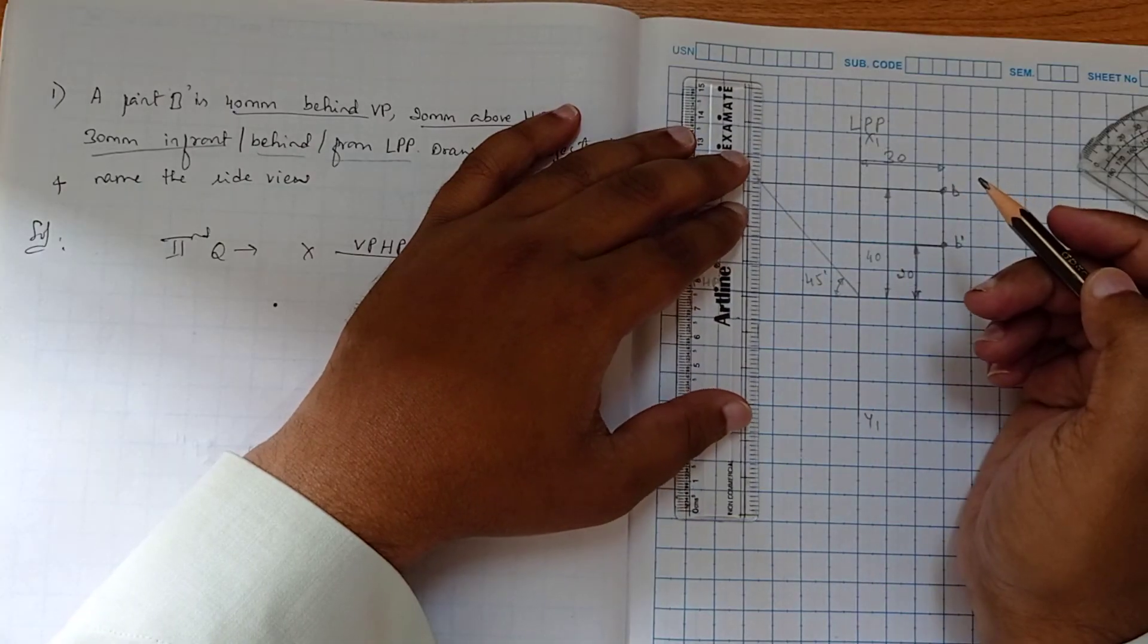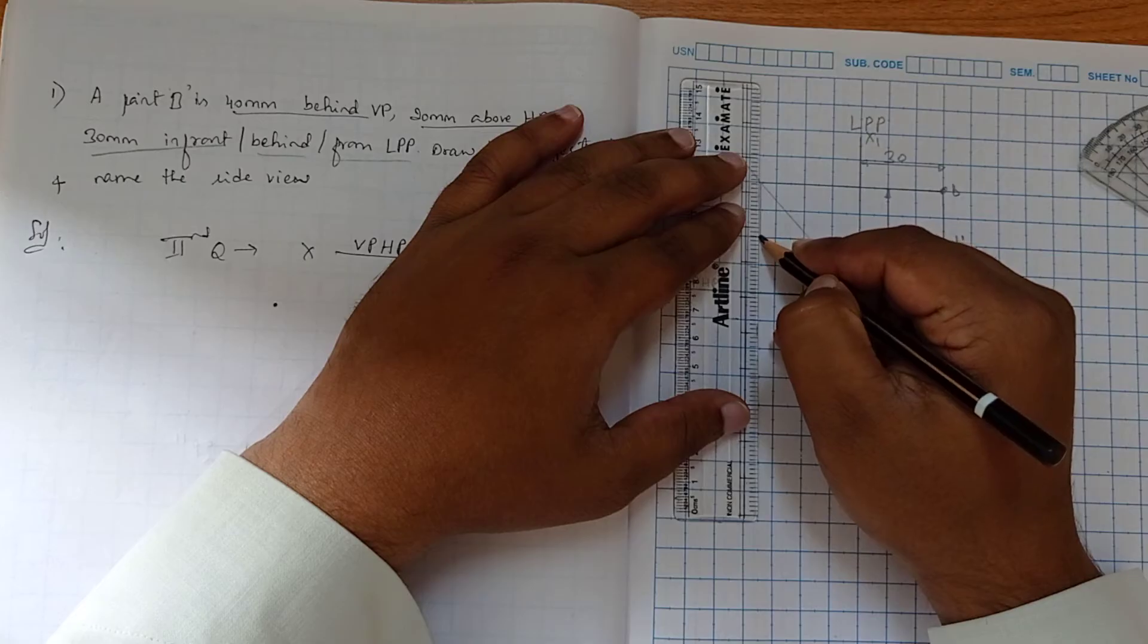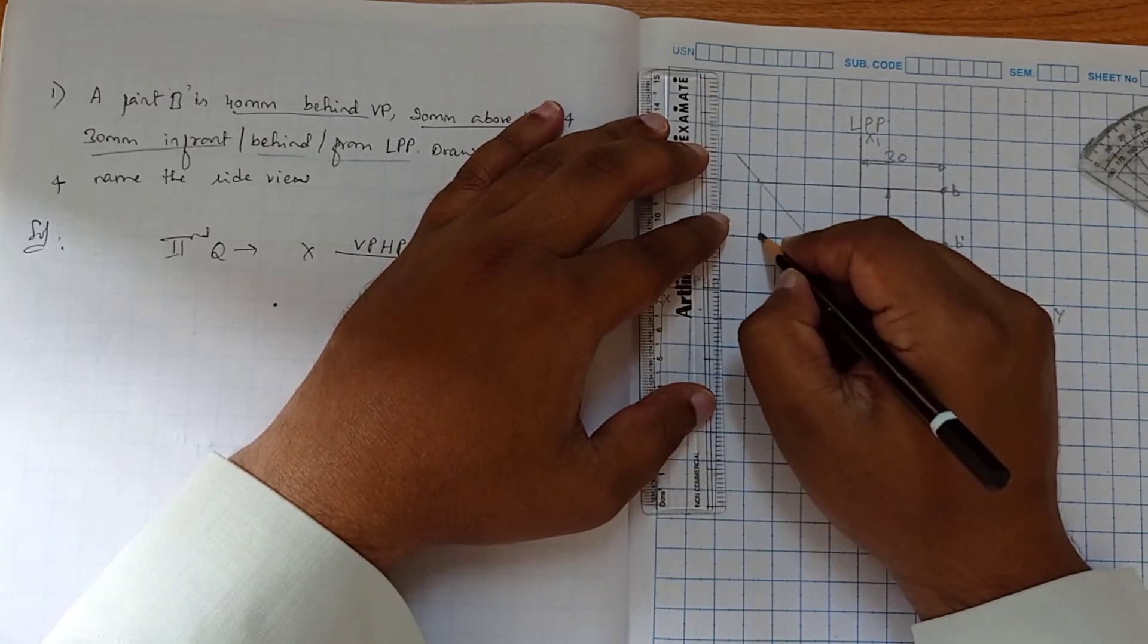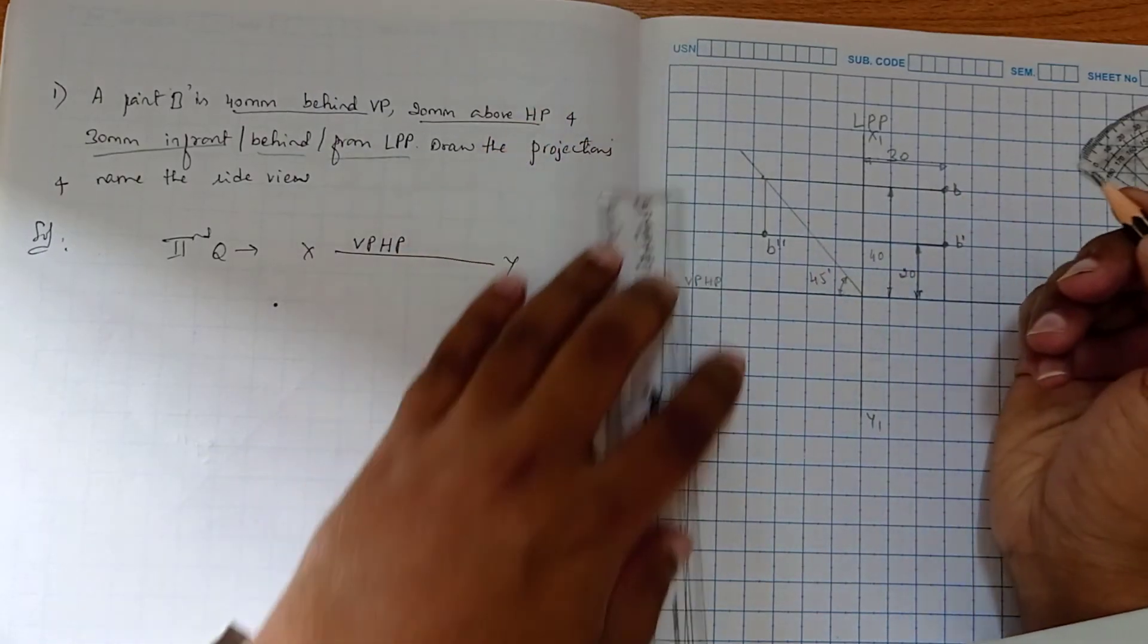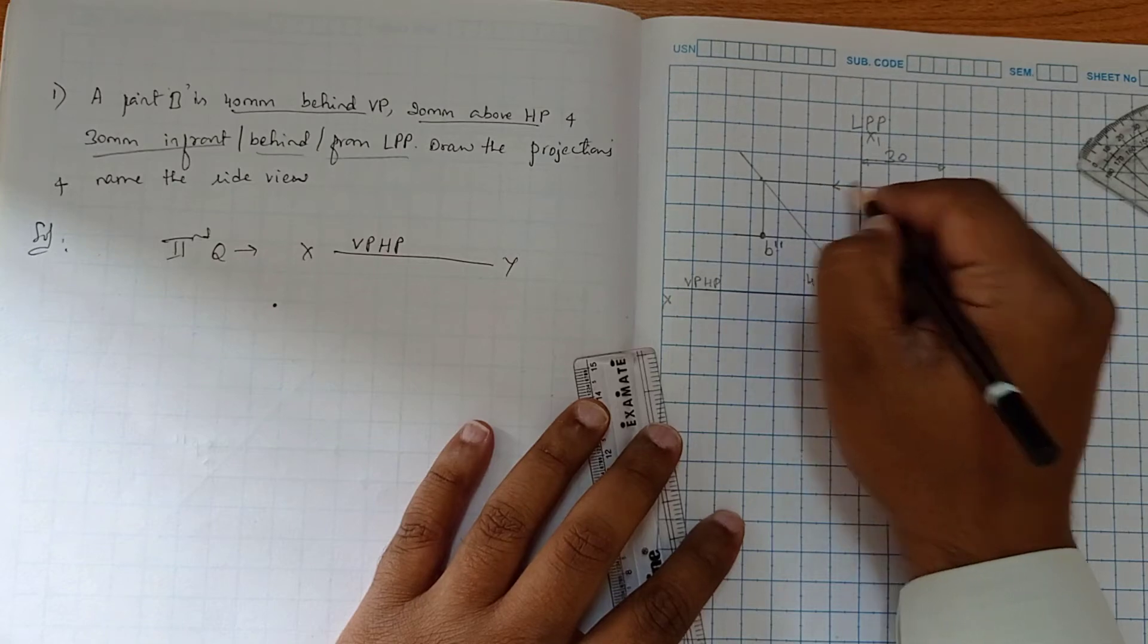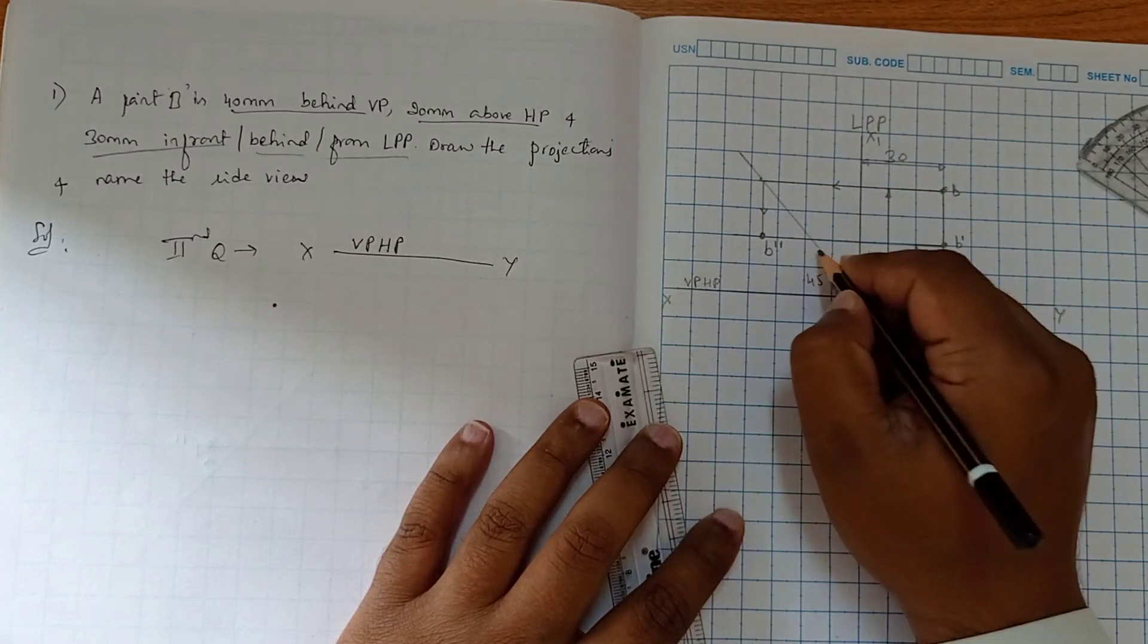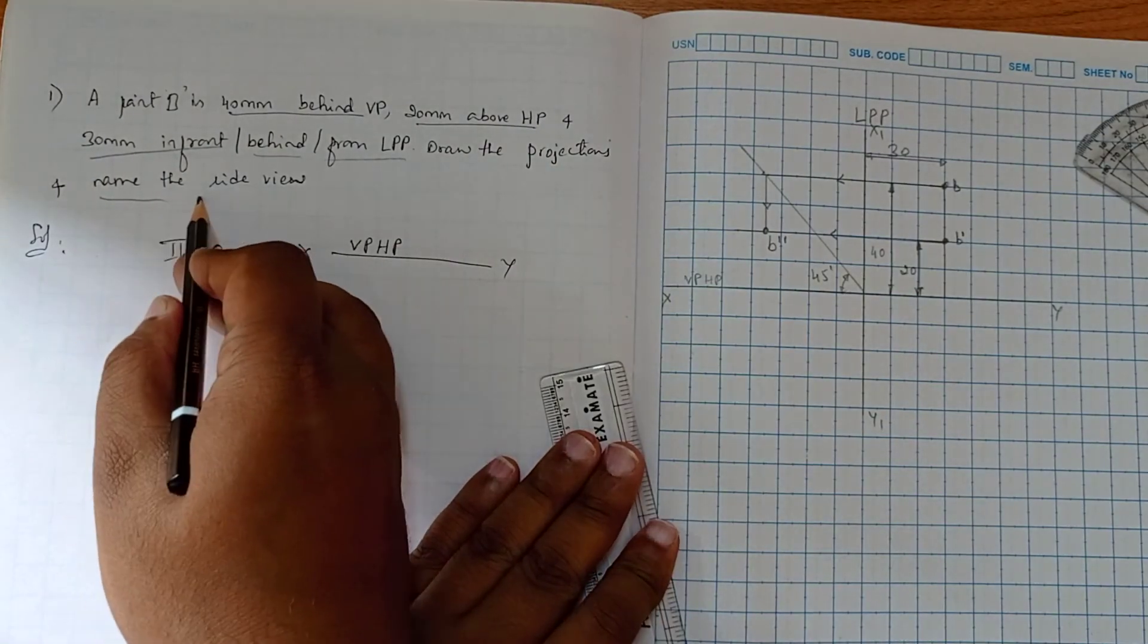From the intersection of this point from the top view, the intersection to the 45-degree line, we have to draw downward. So here the intersection of these two lines, we get the side view. So this is the direction of the projection line.